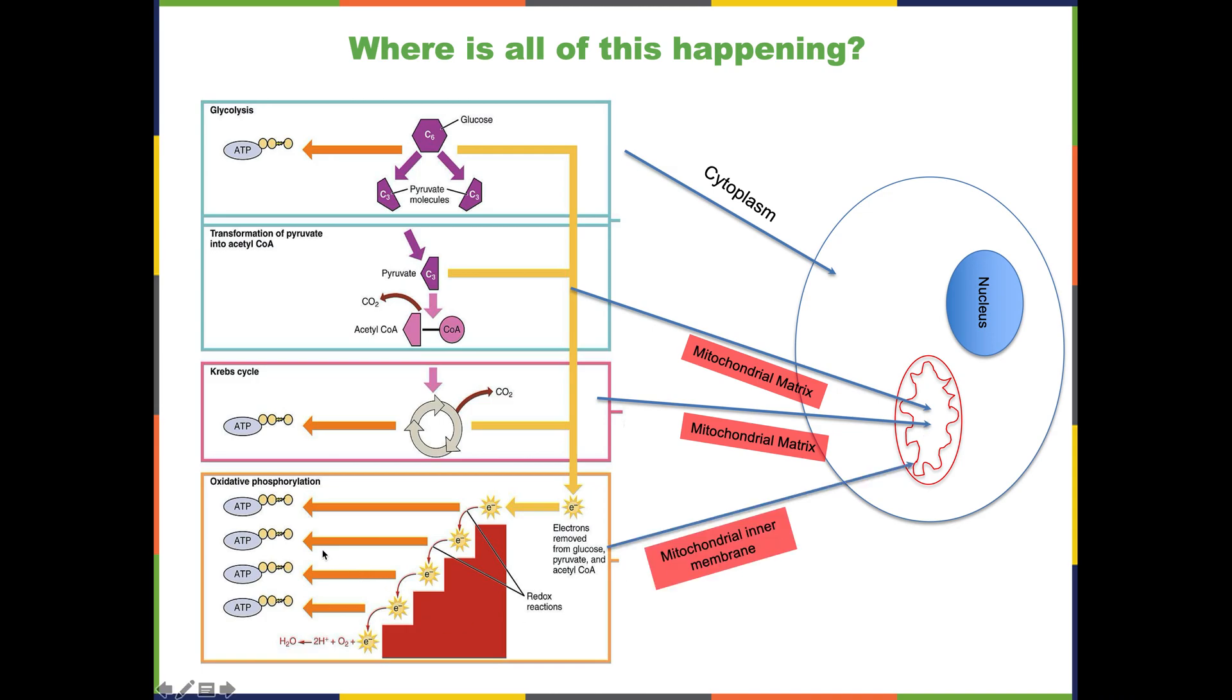Oxidative phosphorylation happens in the mitochondrial inner membrane. This is why mitochondria has such folds—there's so much surface area in the inner membrane because the cell wants to maximize this process by packing as many cellular components involved. It is important that you know where each of these steps are happening.